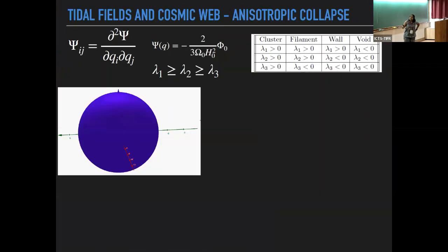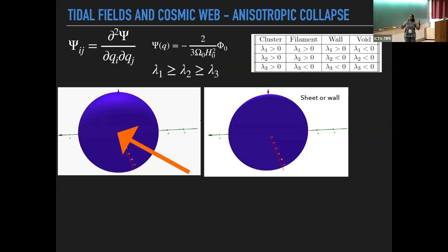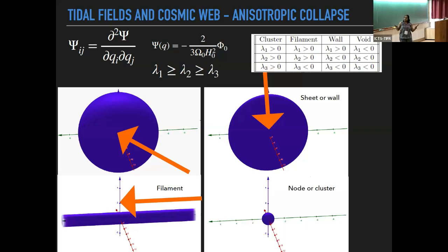This was covered by Uri yesterday — just to recap: there is an over-density and an anisotropic collapse due to the tidal fields. Collapse along one axis gives a wall or sheet; collapse along the second axis gives a filament; collapse along the third axis forms nodes or clusters. For our purposes, this collapse along the last axis defines the E3 vector, which we will refer to as the filament direction in this talk.